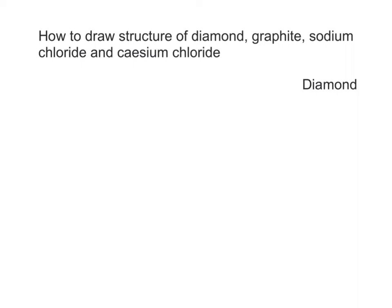Dear students, this is the revision of how to draw the structure of diamond, graphite, sodium chloride, and cesium chloride. Here I will draw part of the giant covalent structure of diamond with a network of strong covalent bonds between carbon atoms. Each carbon atom is covalently bonded to four other carbon atoms by a single covalent bond.